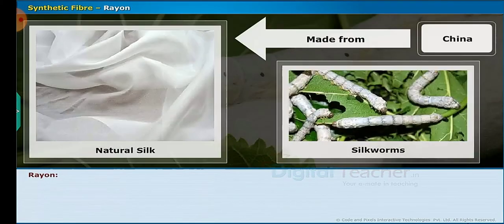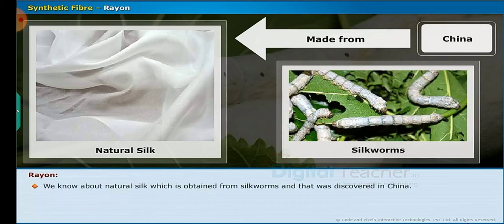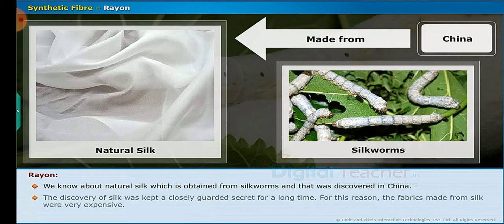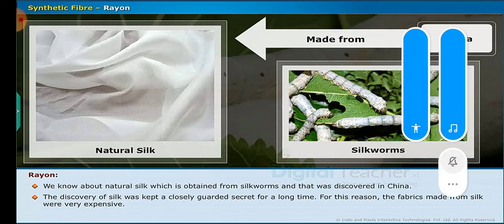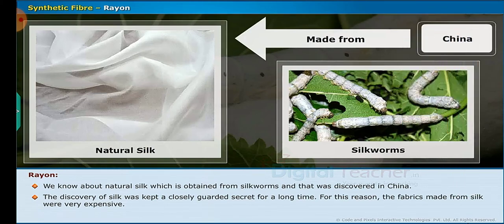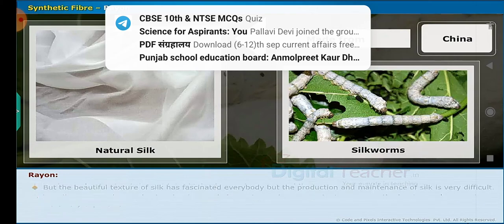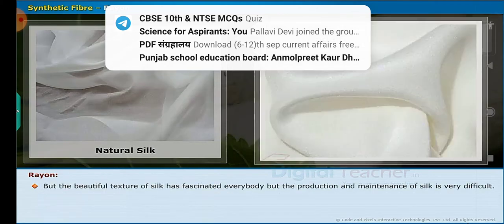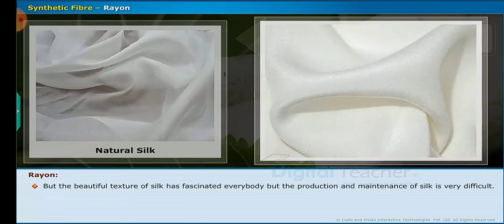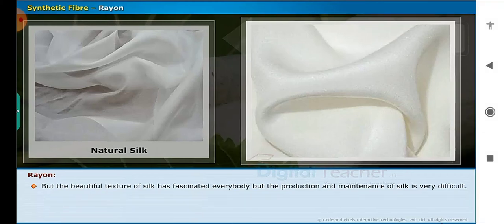Now let us study about rayon, which is another type of synthetic fiber. We know about natural silk, which is obtained from silkworms and was discovered in China. The discovery of silk was kept a closely guarded secret for a long time. For this reason, the fabrics made from silk were very expensive. But the beautiful texture of silk has fascinated everybody, while the production and maintenance of silk is very difficult.